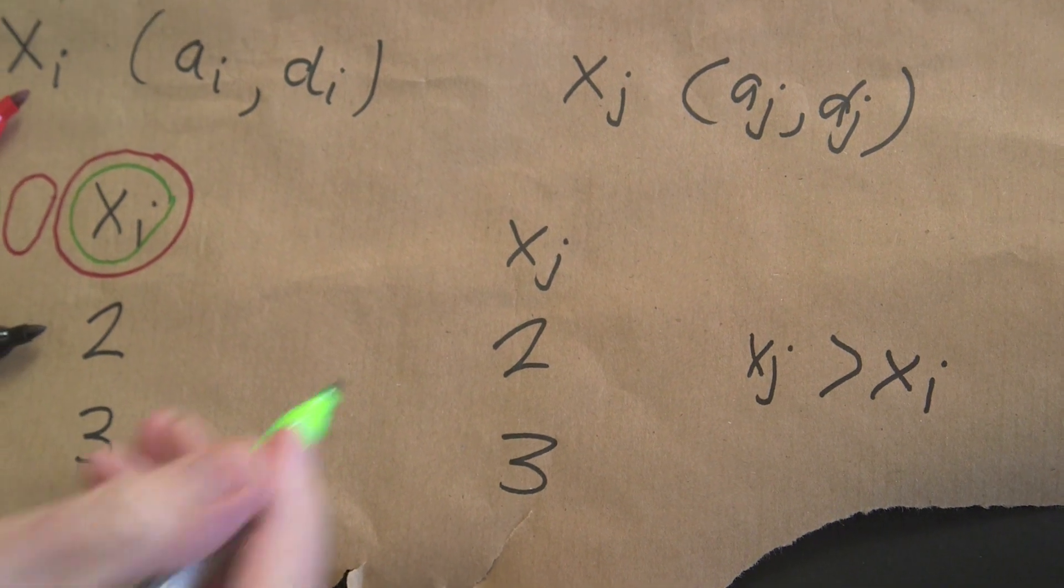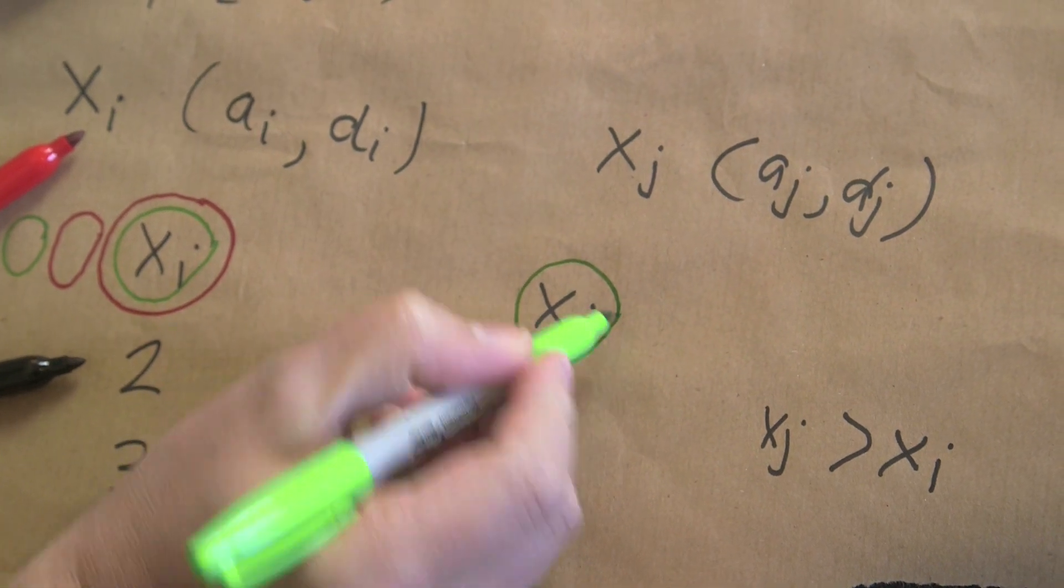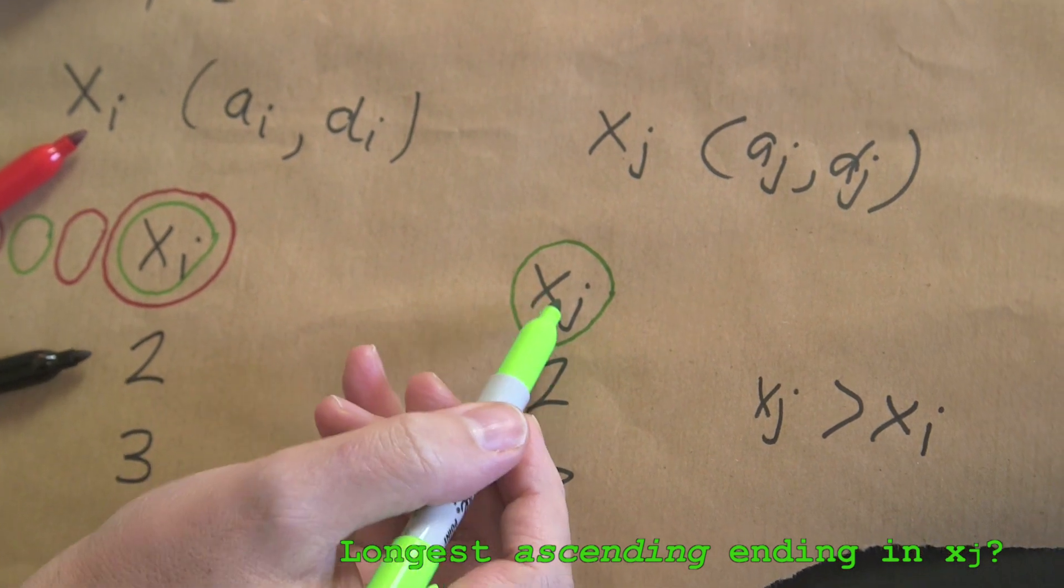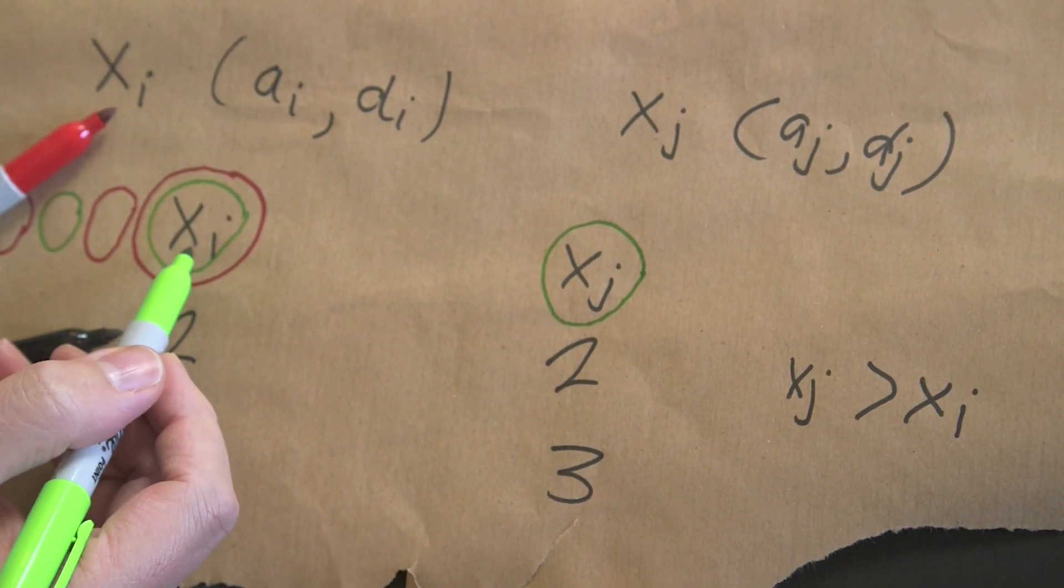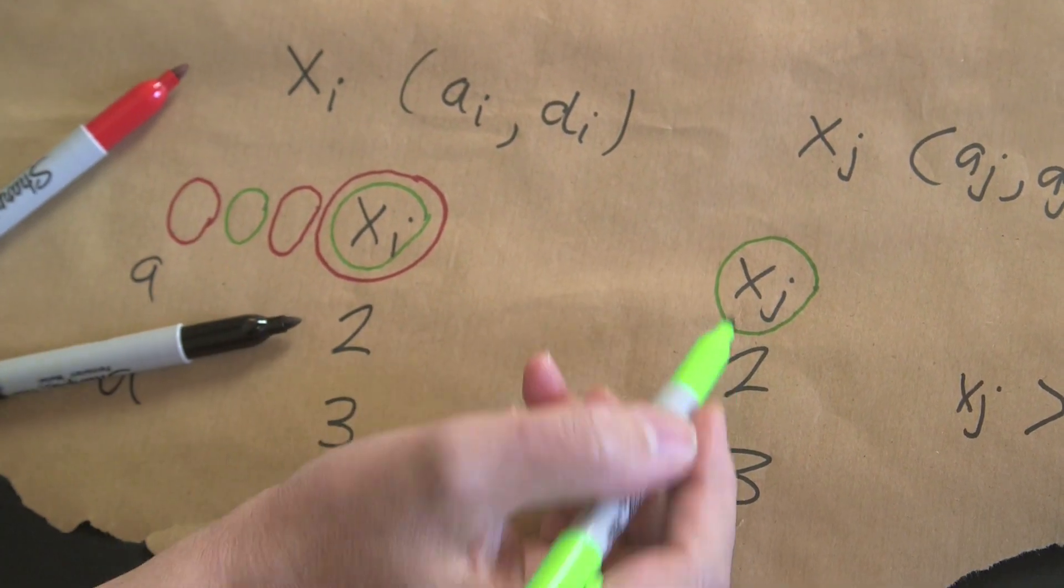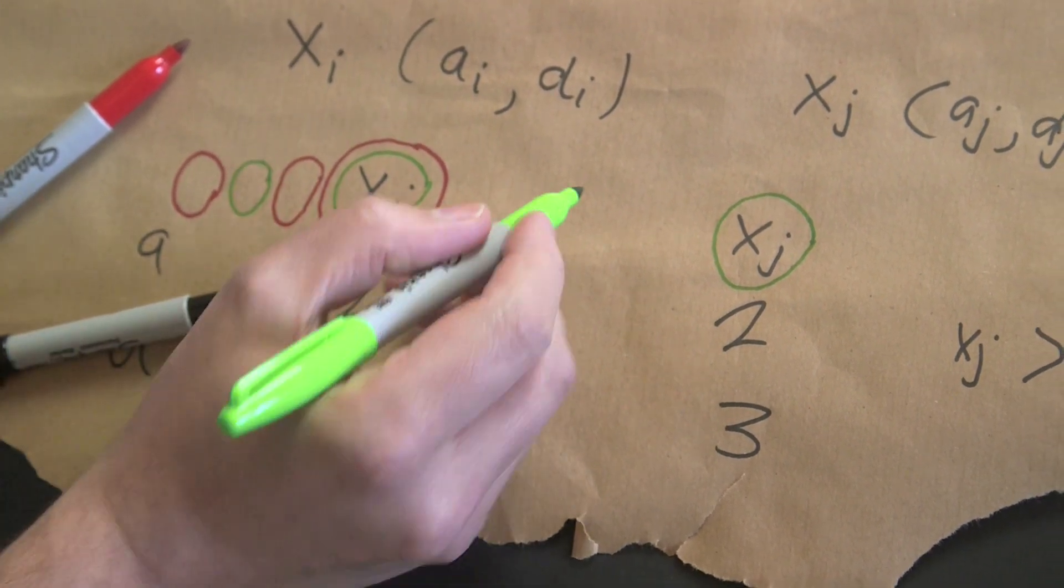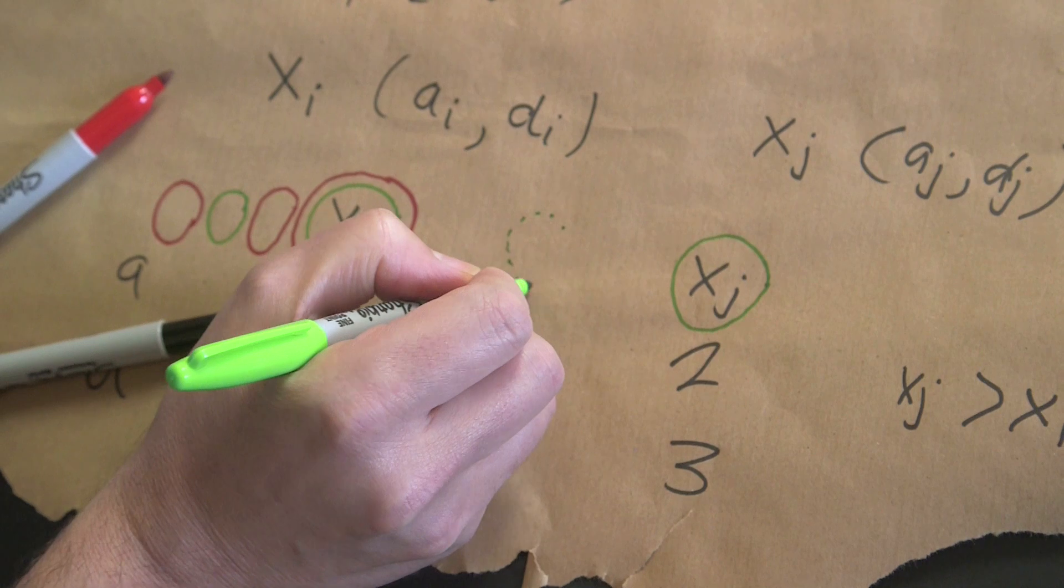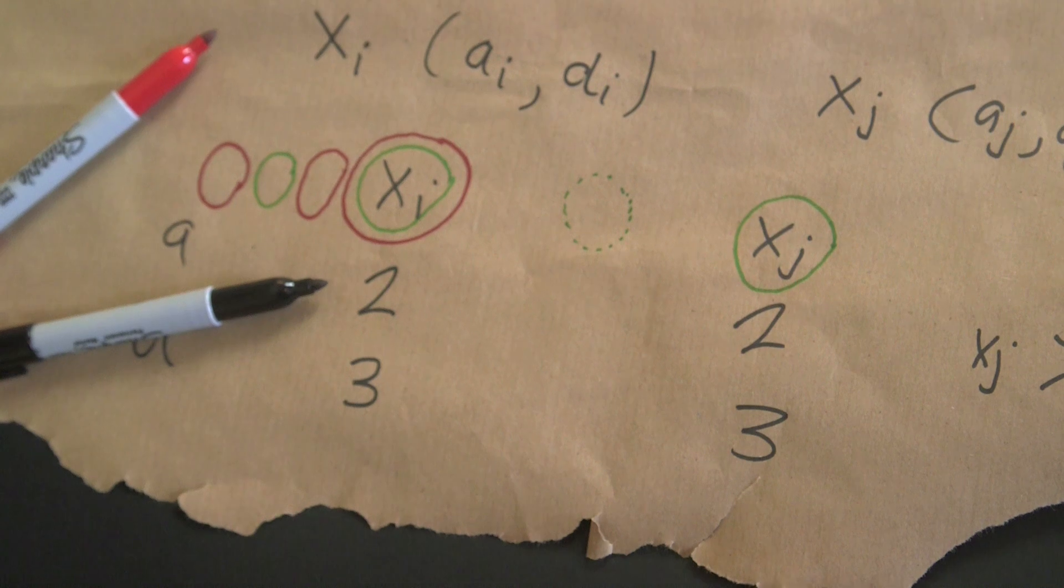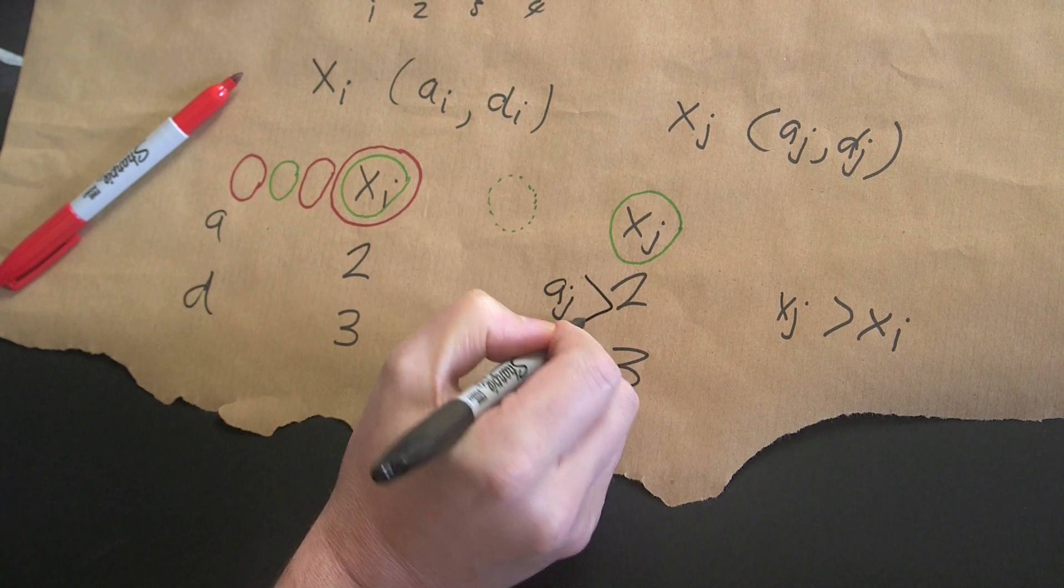And so now we go, okay, so xj is greater than xi. What's the longest subsequence that ends in xj? So I know xj is greater than xi, but there's also another green one here that it's greater than. So I already know it can't be two. It's got to be at least three. But in actual fact, it could even be bigger because there could be other ones here that are greater than xi and less than xj. I don't know, but that's not the point. The point is that this aj, it has to be greater than two.